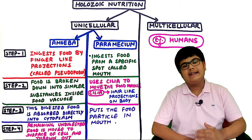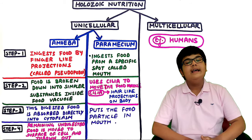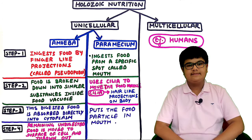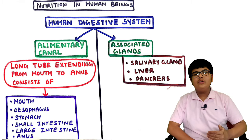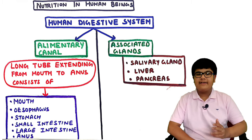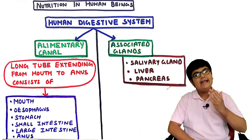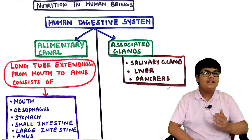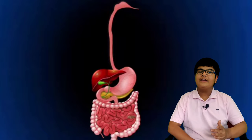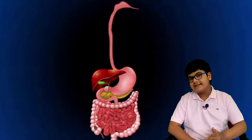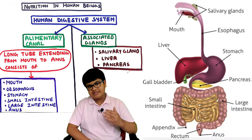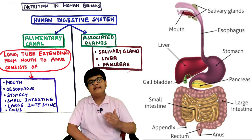Multicellular organisms carrying out holozoic nutrition include all mammals, including humans. The human digestive system is divided into two parts. The first is the alimentary canal - a long tube extending from the mouth to the anus, consisting of mouth, esophagus, stomach, small intestine, large intestine, and anus. The associated glands are salivary glands, liver, and pancreas.